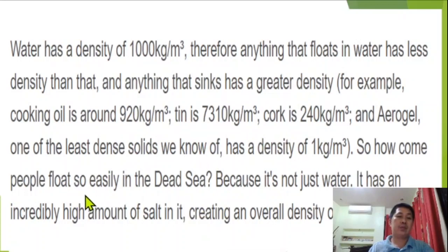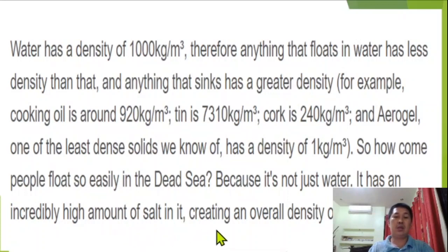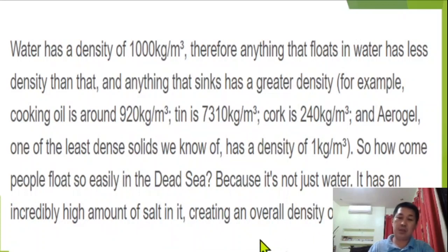So how come people float so easily in the sea? Because it's not just water — it has an incredibly high amount of salt in it, creating an overall density of 1,240 kg per cubic meter.